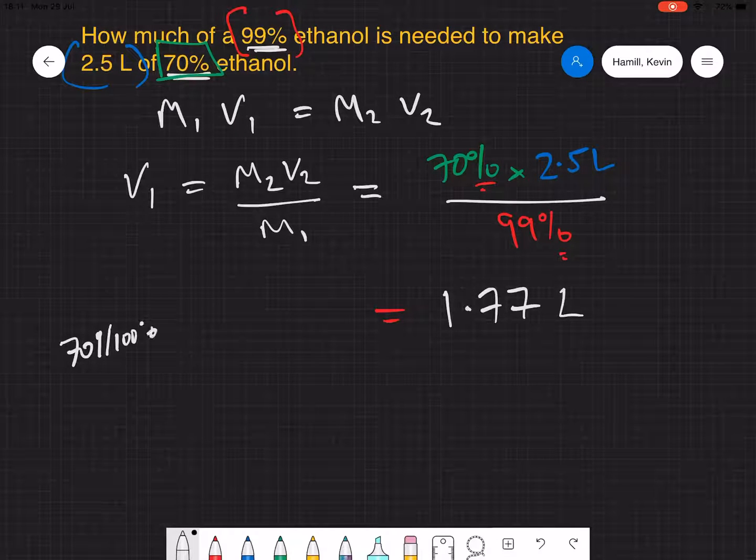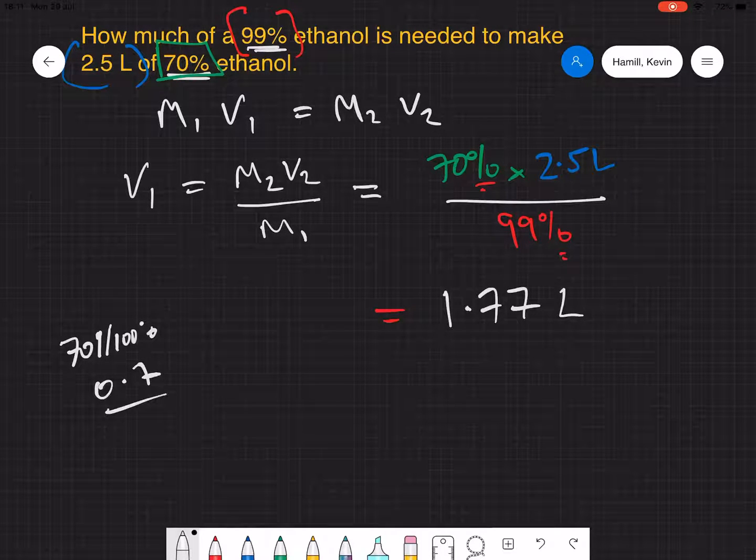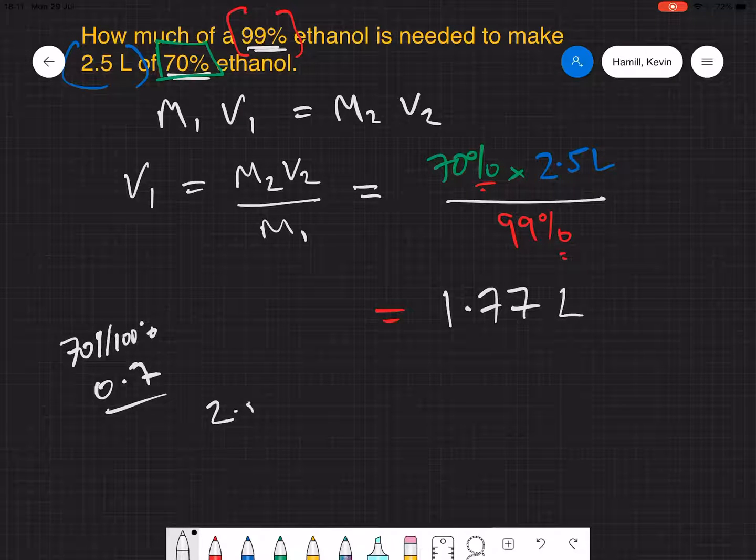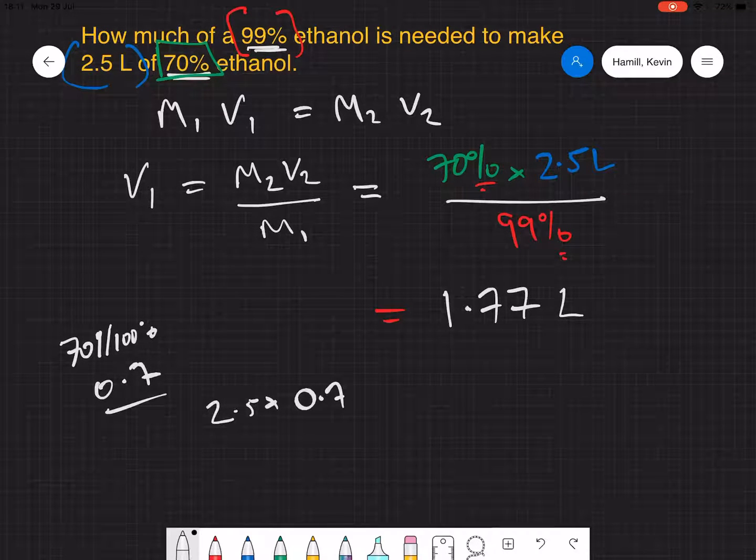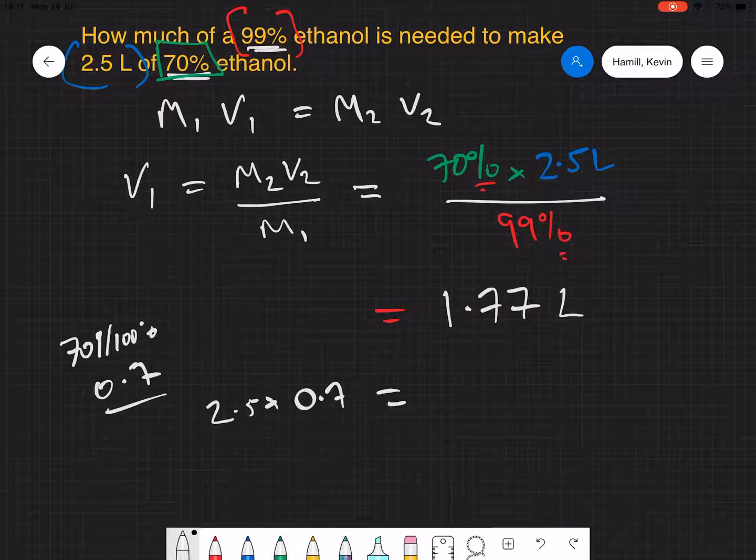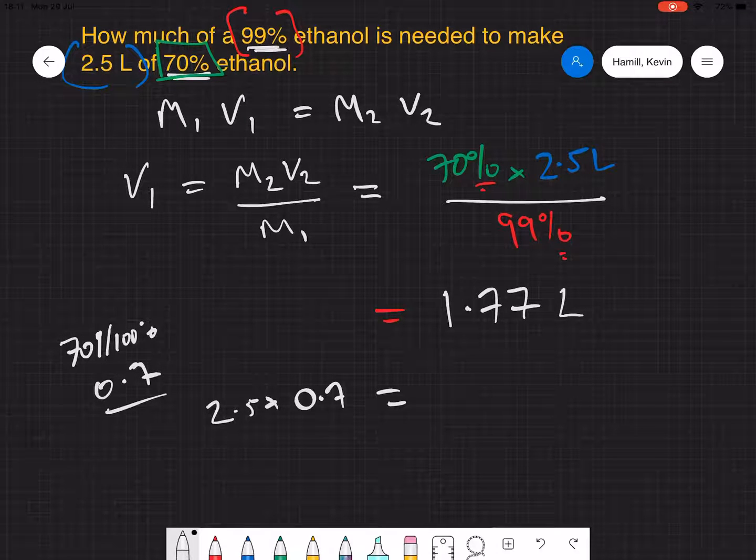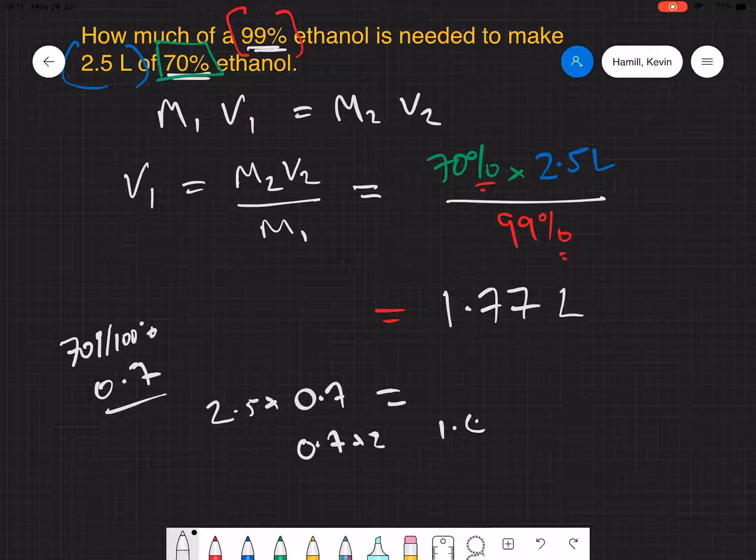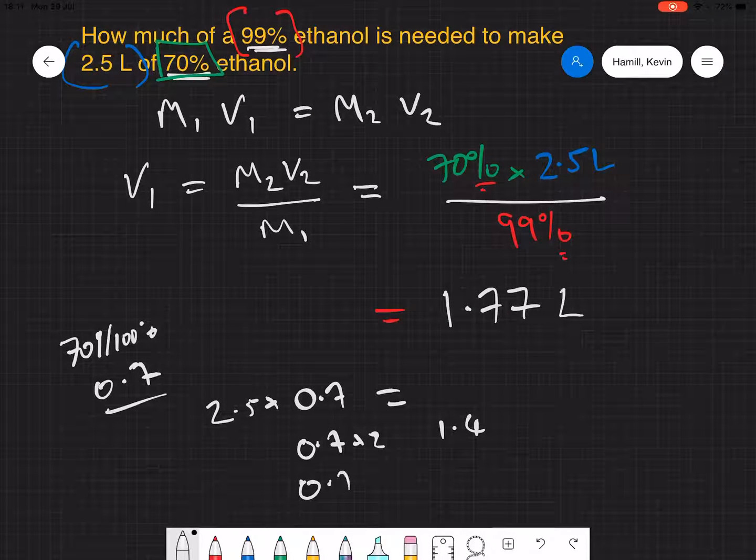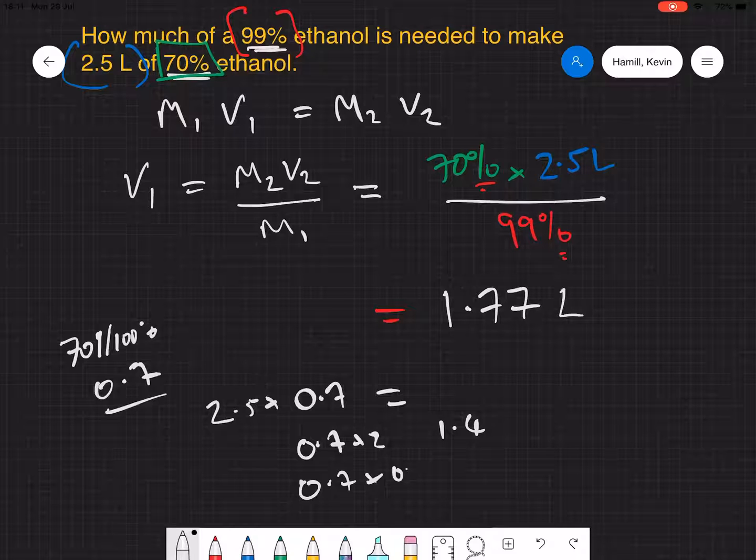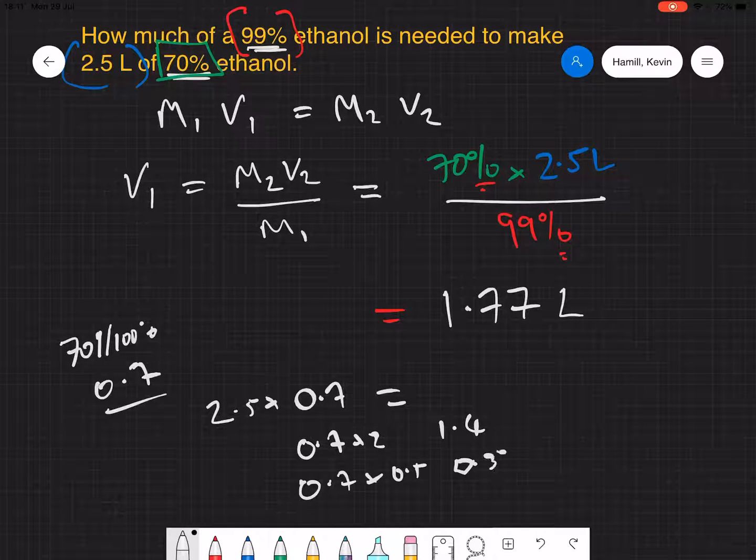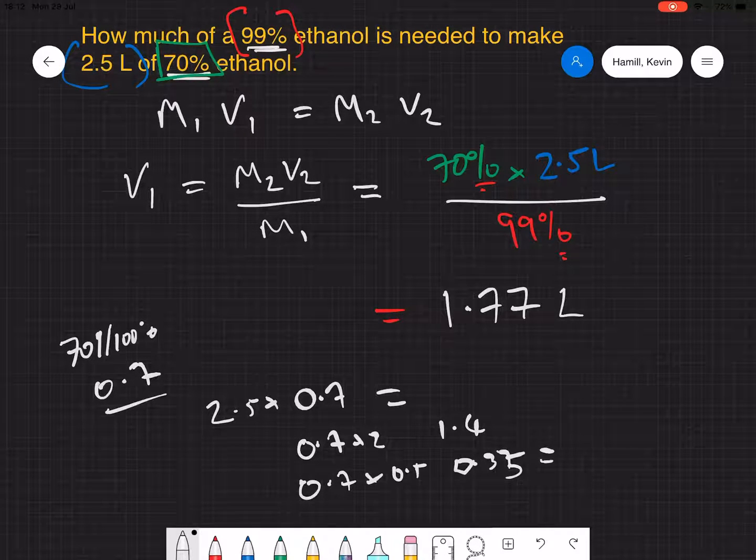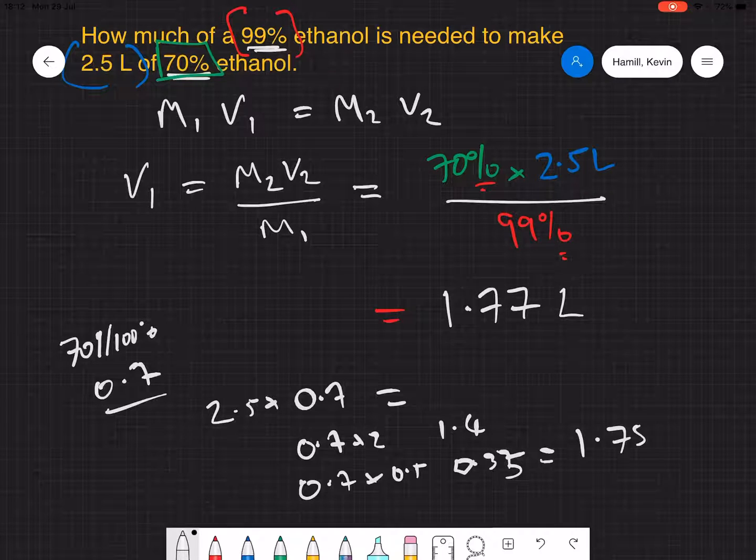which is 0.7. So all I need to do is take two and a half times 0.7 and I'll get a pretty close approximation of what I need to do. Now what's that? So that's 0.7 times 2, 1.4, 0.7 times a half, 0.35, therefore 1.75 liters.